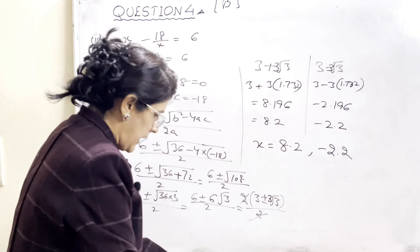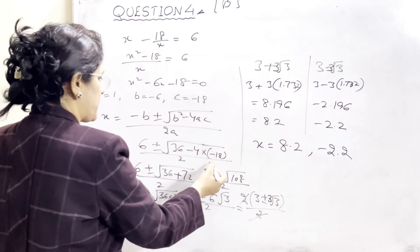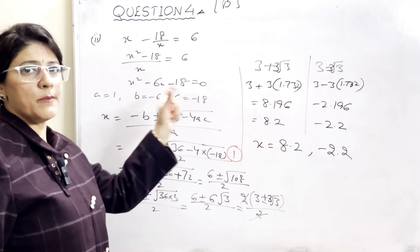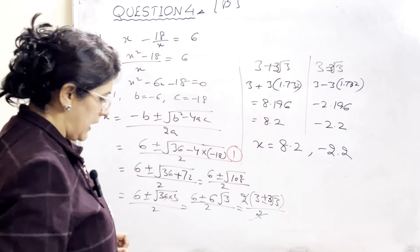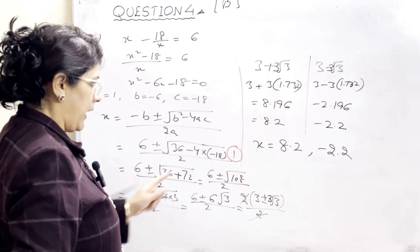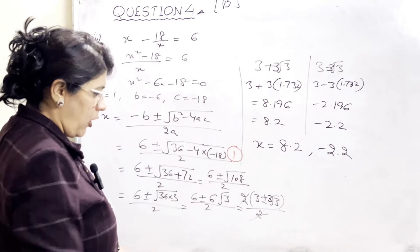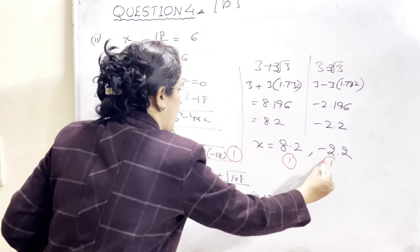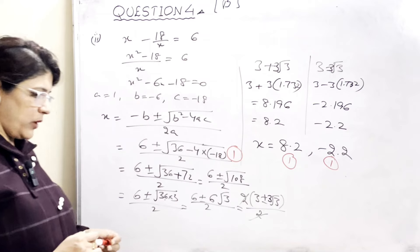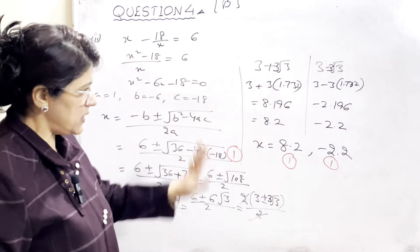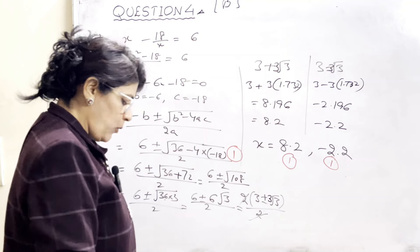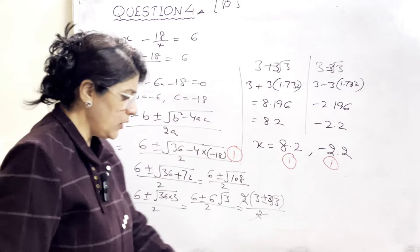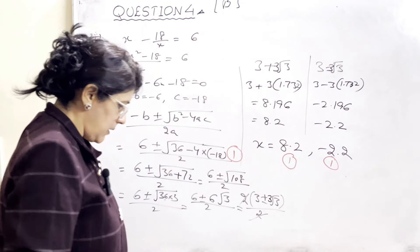Is question ki marks bifurcation: jab formula sahi uthaa lenge aur substitution sahi karenge, ek mark milega. Yani student A, B, C identify kar sake aur formula mein achhe se daale. Dono roots poore sahi hone par 3 marks milenge. Kyunki yeh 3 marks ka question hai, toh thodi mehnat karni padegi.